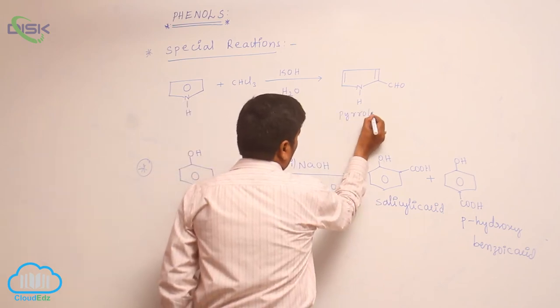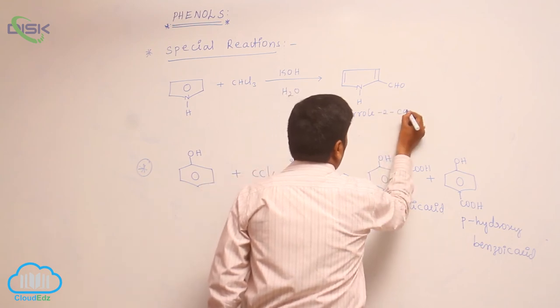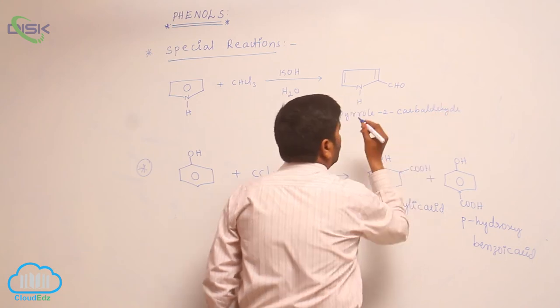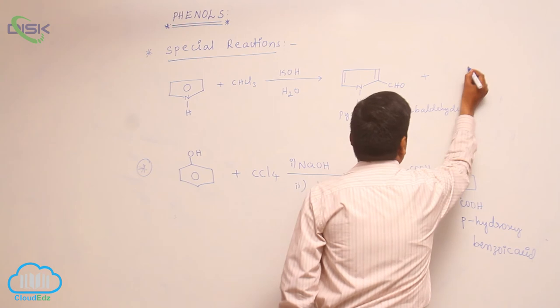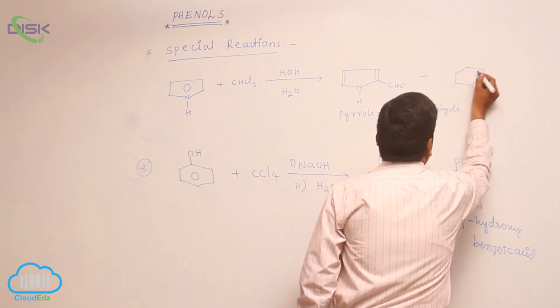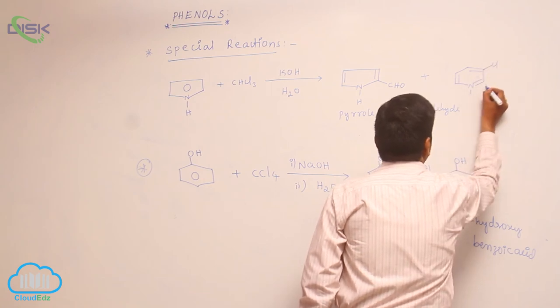Pyrrole-2-aldehyde, 2-carbaldehyde, pyrrole-2-carbaldehyde. And the important byproduct in this particular reaction is chlorine 1,2,3.